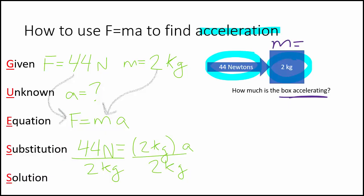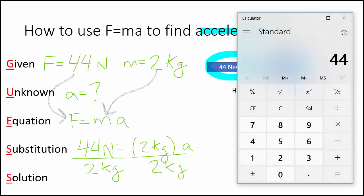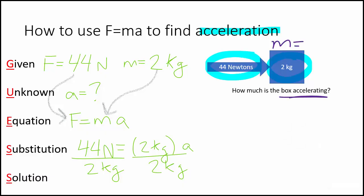Pull up my calculator. 44 divided by 2 equals 22. And on this side they cross out. The acceleration equals 22, and the unit for acceleration is meters per second squared. Now we could go into a whole video about how these units work and why it comes out to be meters per second squared. But for right now I'm just going to have you memorize that acceleration is meters per second squared, that mass is in kilograms, and that force is in newtons.